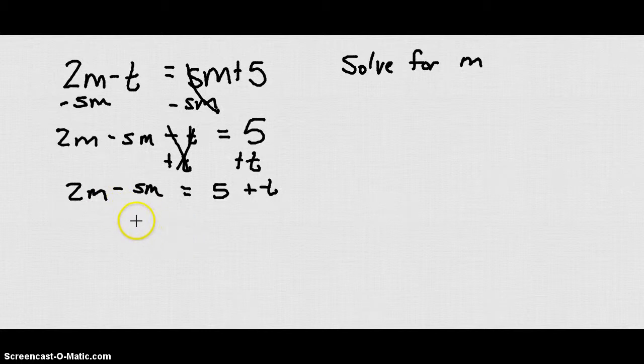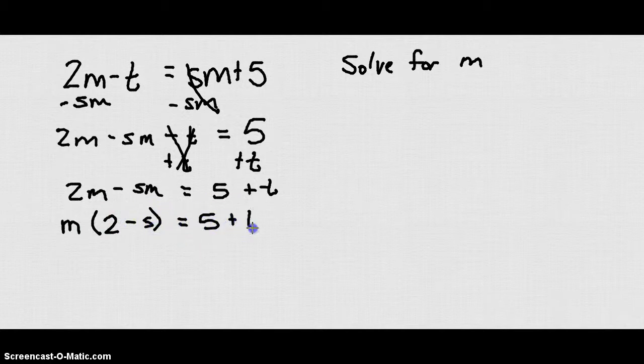We can't combine 2m and sm because we can't subtract 2 and s. But what we can do is factor out an m. So we would have m times the quantity 2 minus s equals 5 plus t.